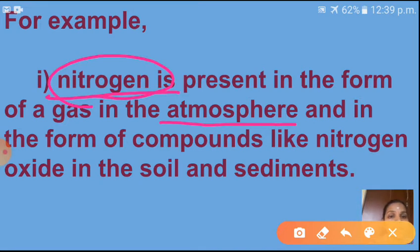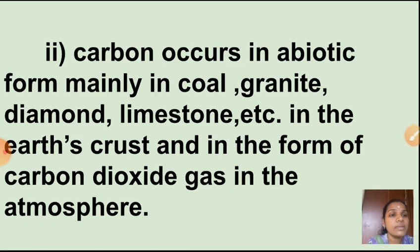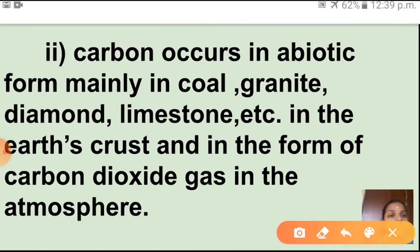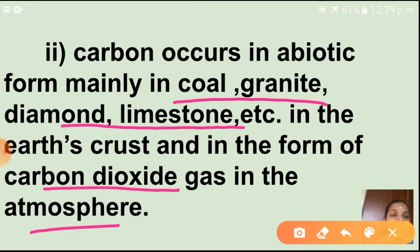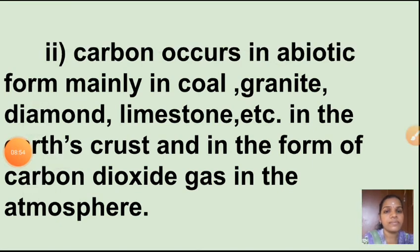Another example: carbon occurs in abiotic form mainly in coal, granite, diamond, and limestone, present in the Earth's crust. At the same time, carbon is present in the atmosphere in the form of carbon dioxide gas. So carbon is present in the atmosphere and also in the Earth's crust — just like nitrogen is in the atmosphere and in the lithosphere.